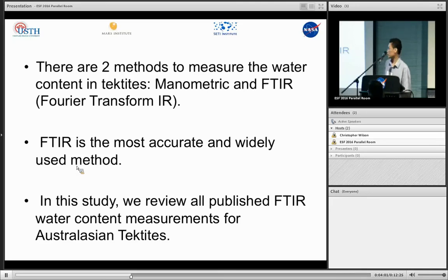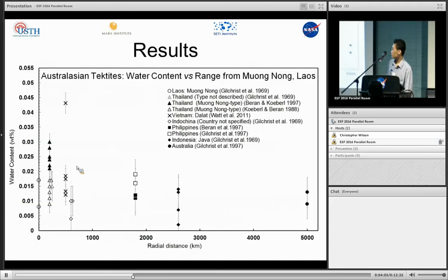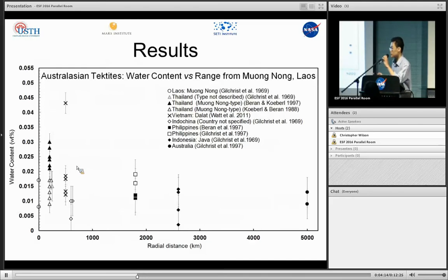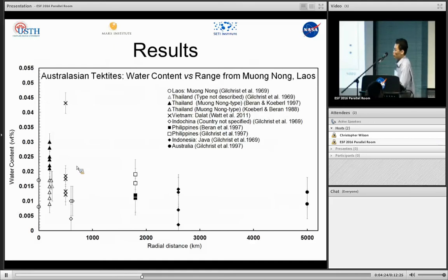Here are the results. While most other tektites are very low in water, Australasian tektites have higher water content — about 0.015%. Even with the most traveled tektites in Australia, they still contain significant water: not high, just about 0.01%, but it is not zero.